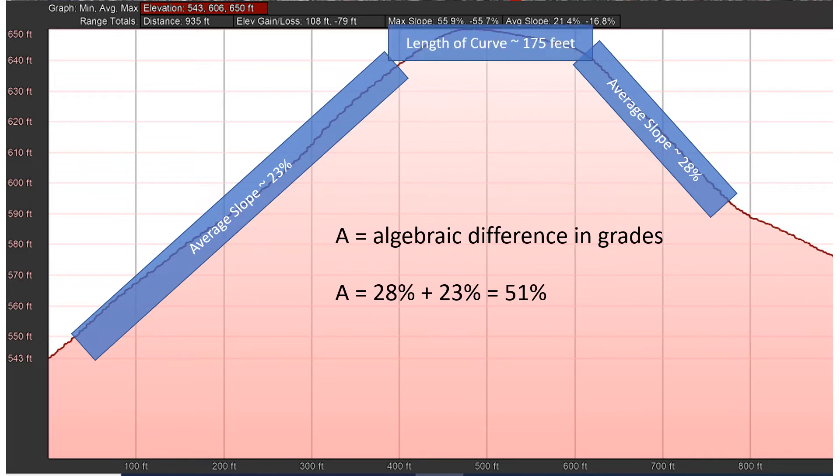And that's accomplished over a very short distance. So the length of curve here is approximately 175 feet. So we're transitioning from a very steep upgrade to a very steep downgrade over a short distance. And we'll see how that relates to an actual design speed through this analysis and evaluation.